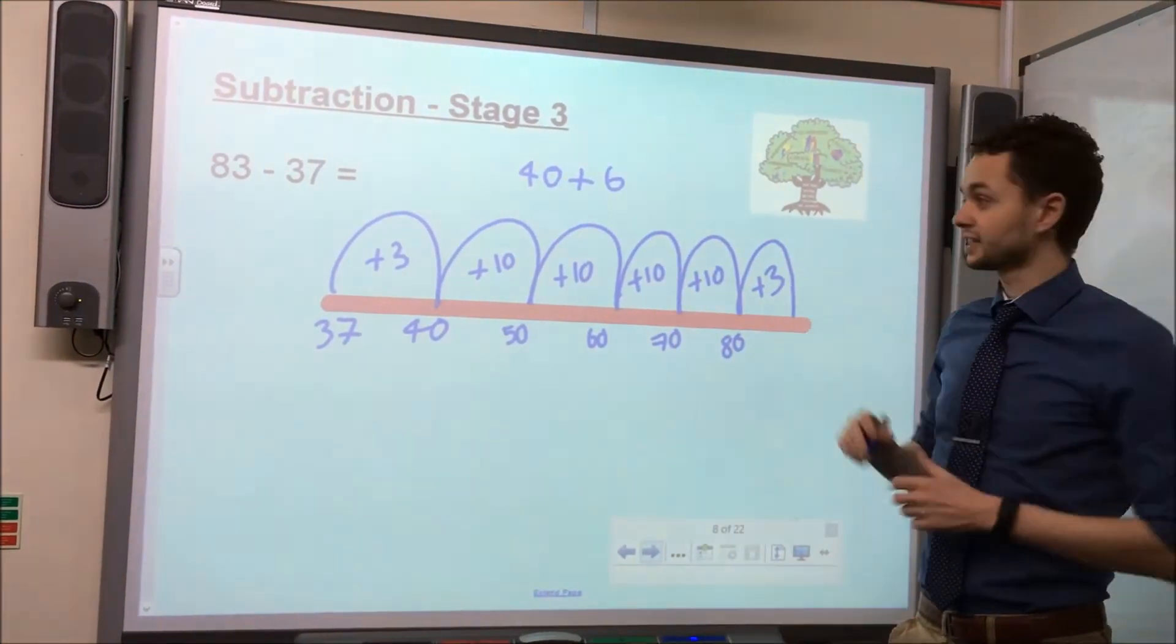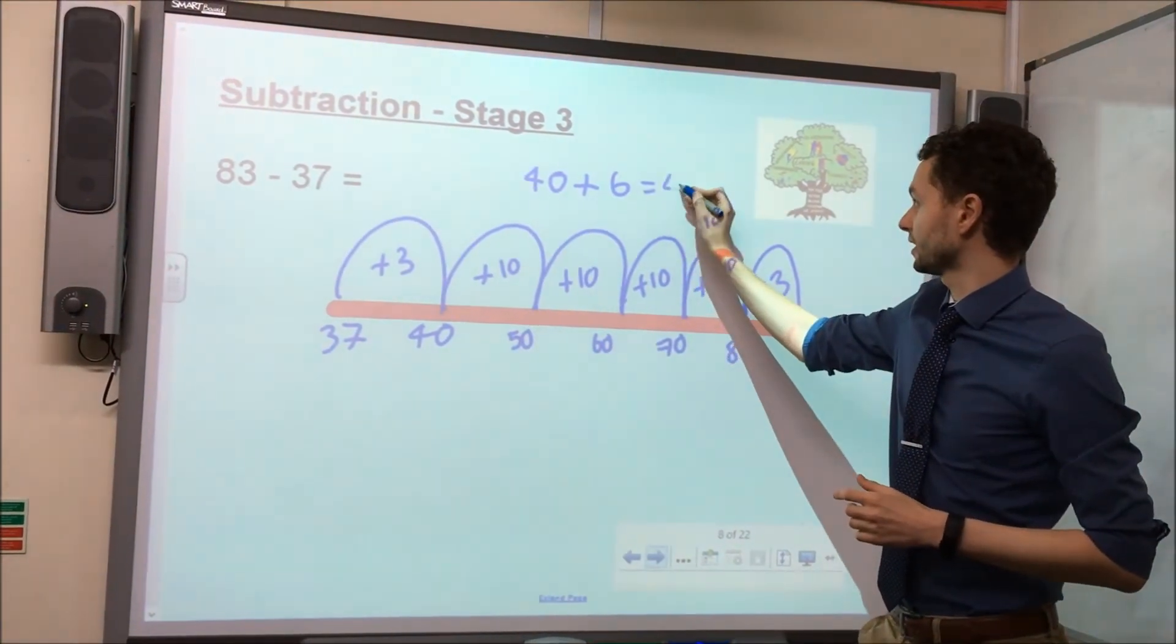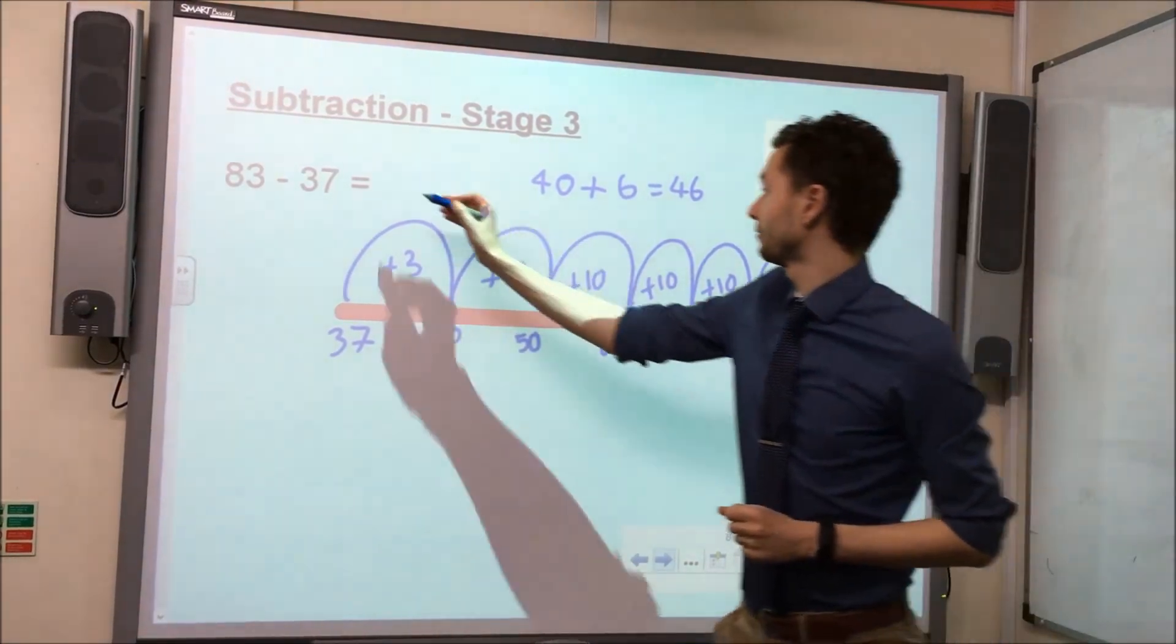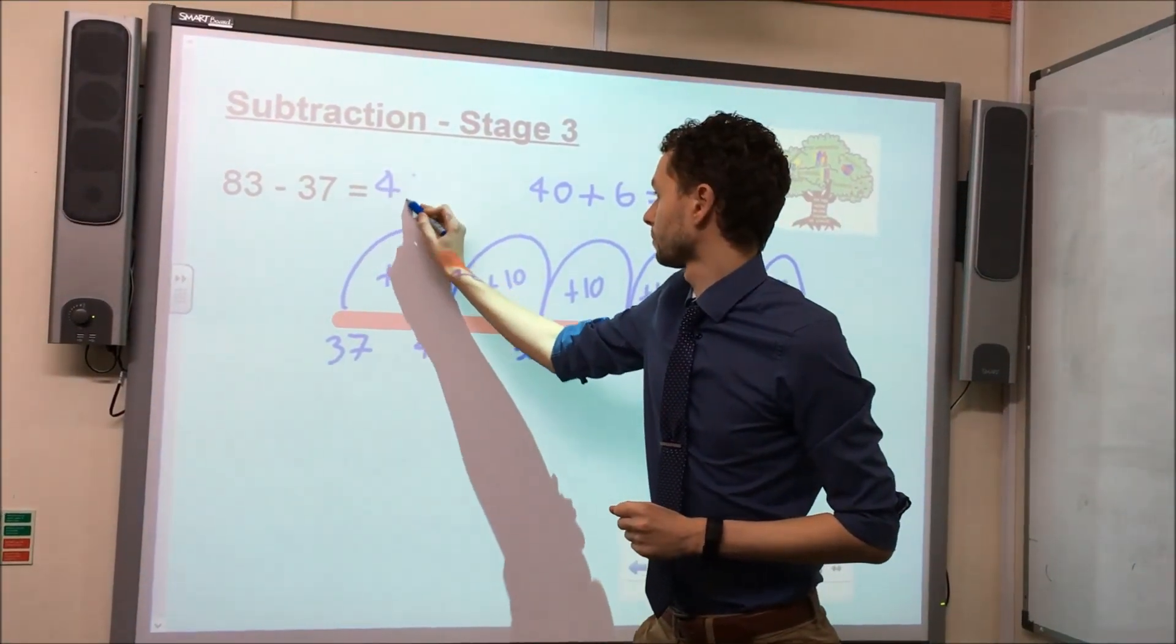So 40 add 6 will give us 46, which is the difference between 83 and 37 and therefore our answer.